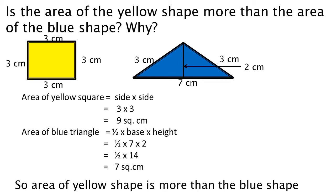For the triangle, measurements are given. Area of blue triangle is equal to half into base into height. The formula to find out the area of a triangle is half into base into height. Half into base — base is seven centimeter, height is two centimeter. Seven by two is 14. Half into 14 is seven square centimeter. So, area of blue triangle is seven square centimeter.